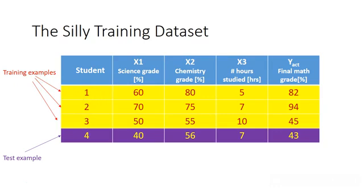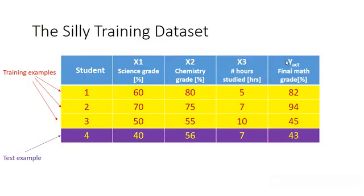The three columns x1, x2, and x3 are the input features, and the final math grade — which we are trying to predict — is y actual. So the input features are x1, x2, and x3, and the output feature is y actual.